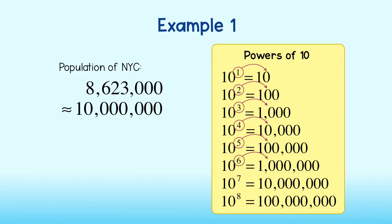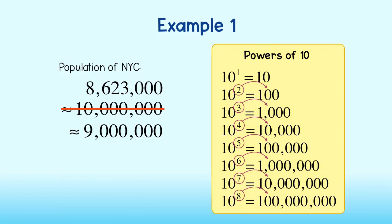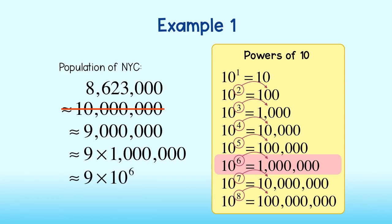We could say that New York City has approximately 10 million people. However, I think we could get a much closer estimate. I would say the population is really closer to 9 million. We can write this as 9 times 1 million, and rewrite 1 million as 10 to the sixth power. So we can represent the population of New York City as 9 times 10 to the sixth power. We've just represented the population using a single digit times a power of 10.